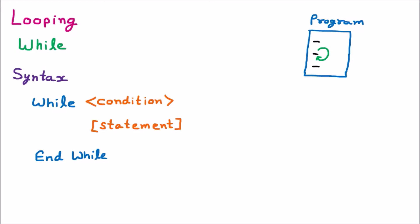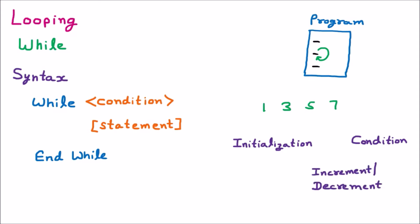To understand the while loop, we take an example. We have numbers starting at one, then three, then five, then seven — four numbers we want to print. For any loop, there are three things to understand: the first is initialization, the second is condition, and the third is increment or decrement. Initialization means from where your loop will start.